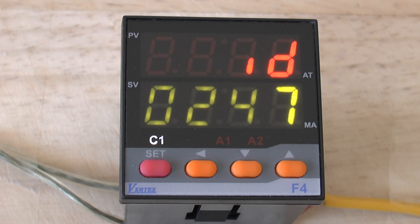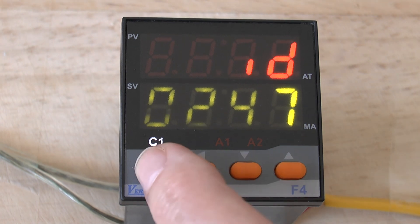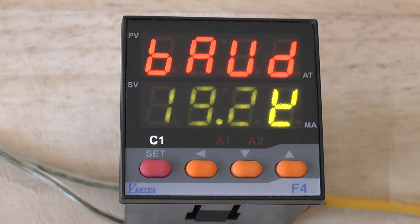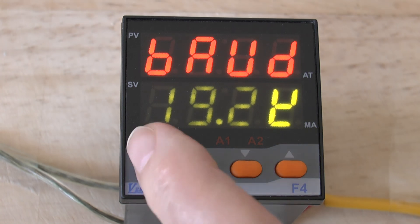The next parameter is the ID. This is the address if you're using RS485. And the next parameter is the board. This is where you set the board rate for RS485 communications.